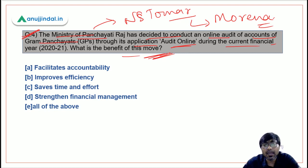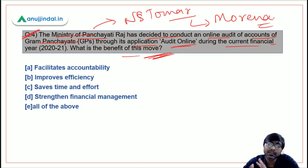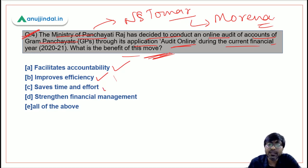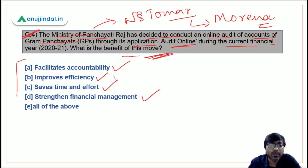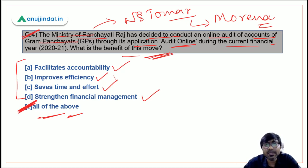What is the benefit of this move? If audit is done online, it will definitely facilitate accountability, improve efficiency, save time and effort, and strengthen financial management. Sometimes exam questions like these seem straightforward but can be tricky when a seemingly correct but incorrect option is included. The answer here is option E — all of the above are benefits of this move.